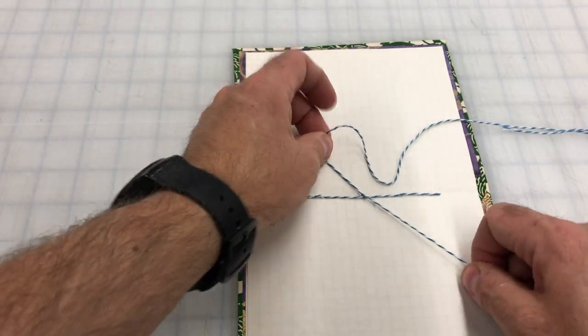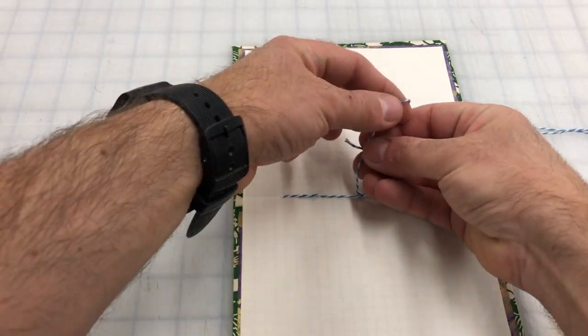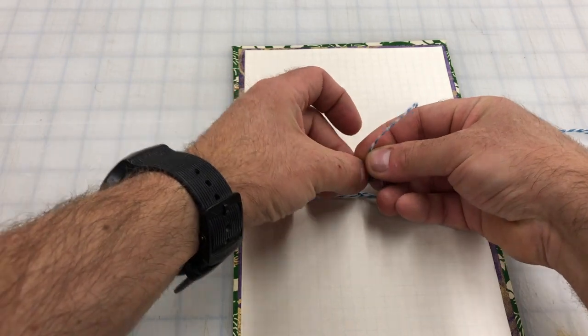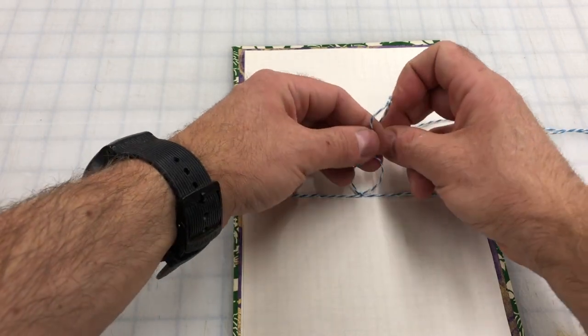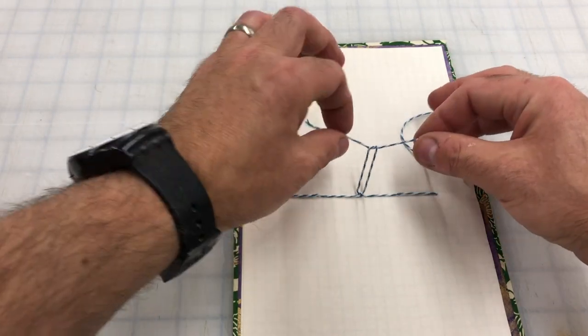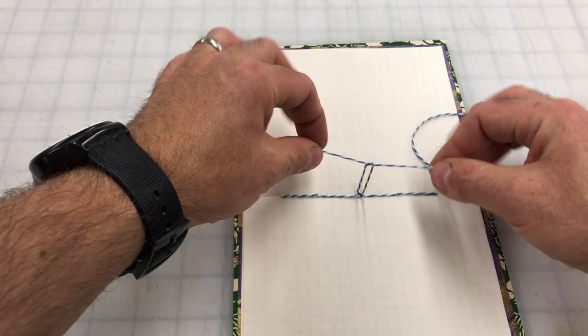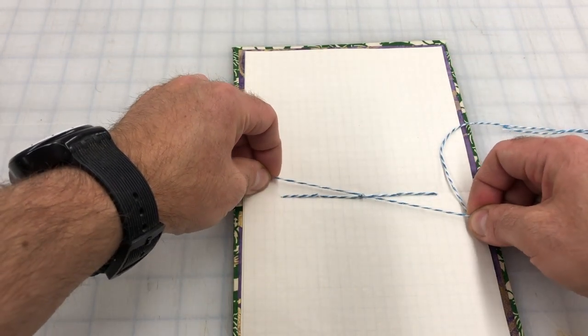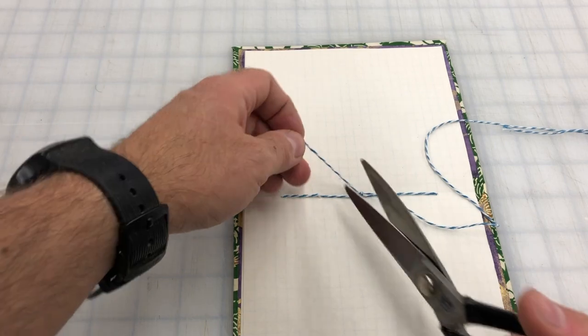And then get my scissors, and then snip it off. You can snip it really close, so that you can barely see the knot. Or, you can cut it like I'm about to do here, leaving a little extra. And there you have it.